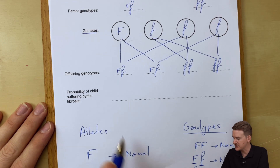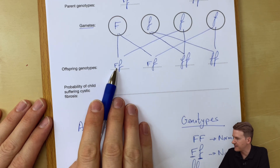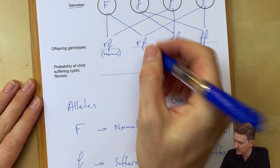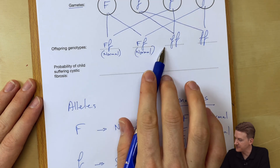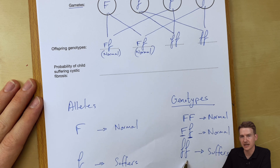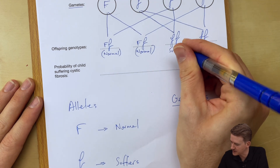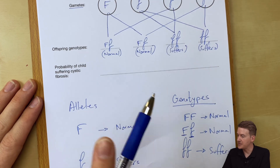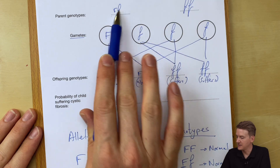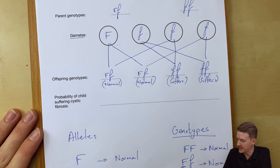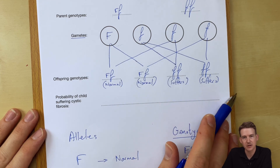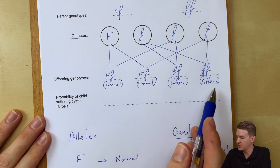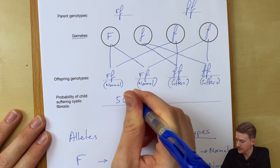So let's write that in here — it doesn't ask us for it in the question, but it will probably help us anyway. Big F small f codes for a person that is normal, does not suffer from cystic fibrosis. We've got big F small f again — same result. This individual right here has two recessive alleles and therefore, unfortunately, suffers from cystic fibrosis. And again, exactly the same result here — suffers. So from these particular parents, in terms of probability, there is a two normal to two suffering probability, two to two. So the probability of a child suffering from cystic fibrosis is two to two, or one to one, or 50%.